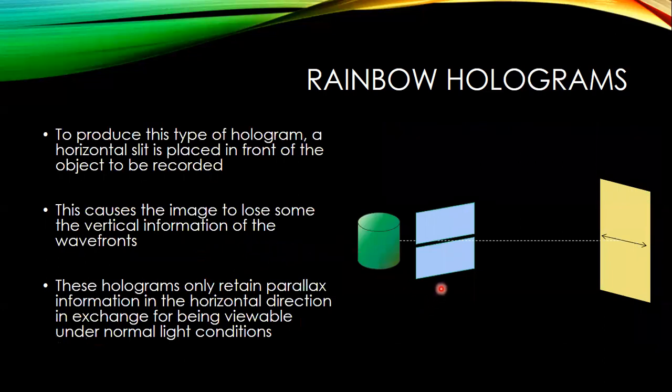Rainbow holograms are produced just like a regular hologram, with the difference that the object light is passed through a slit. This eliminates the vertical information — we just get the horizontal wavefront information — but it allows us to view the hologram in visible light. Most of these holograms are recorded and then embossed: the hologram is used to produce a three-dimensional relief which is then pressed into foil to produce a reflective hologram, or into some transparent material which is then coated.